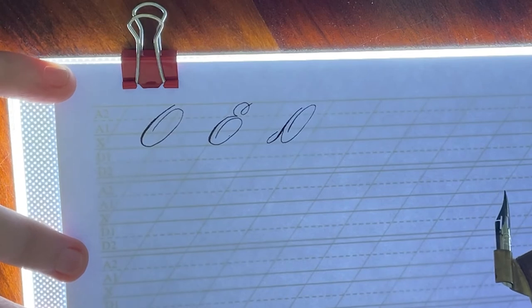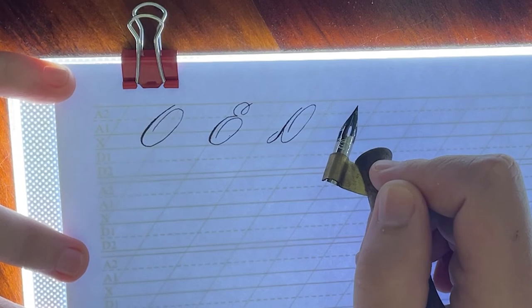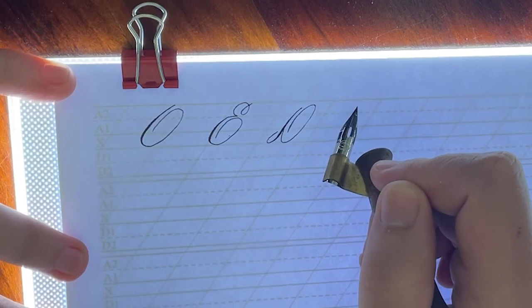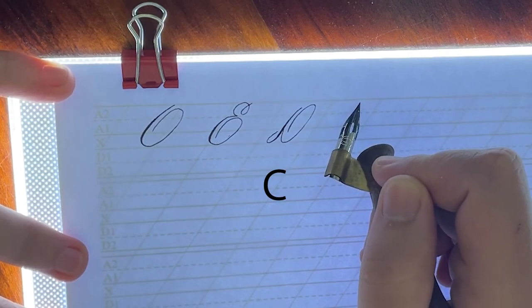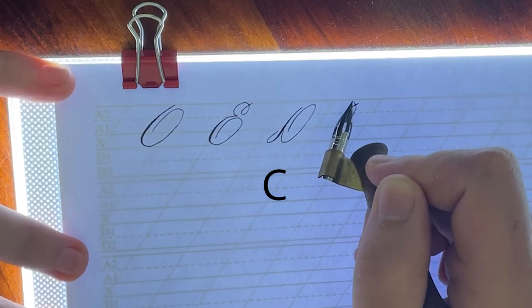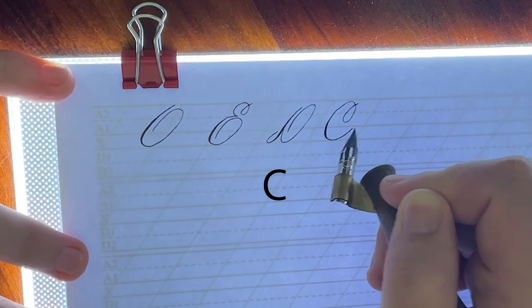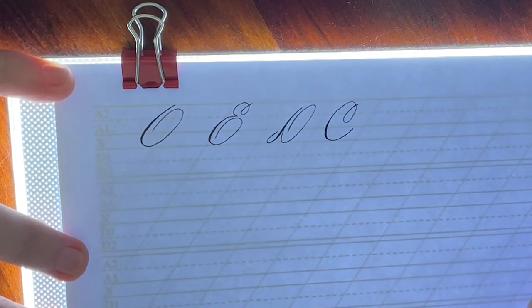Now for C, it's a little bit of the same. We start just before the second ascender, and we get a loop, and some shading down at the bottom.